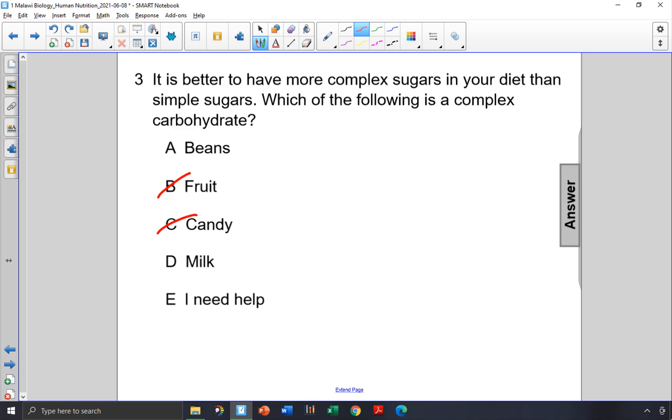Lactose is a simple sugar, so choice D is not the correct answer. Beans contain more complex carbohydrates and also contain fiber, so choice A, beans, is the correct answer.